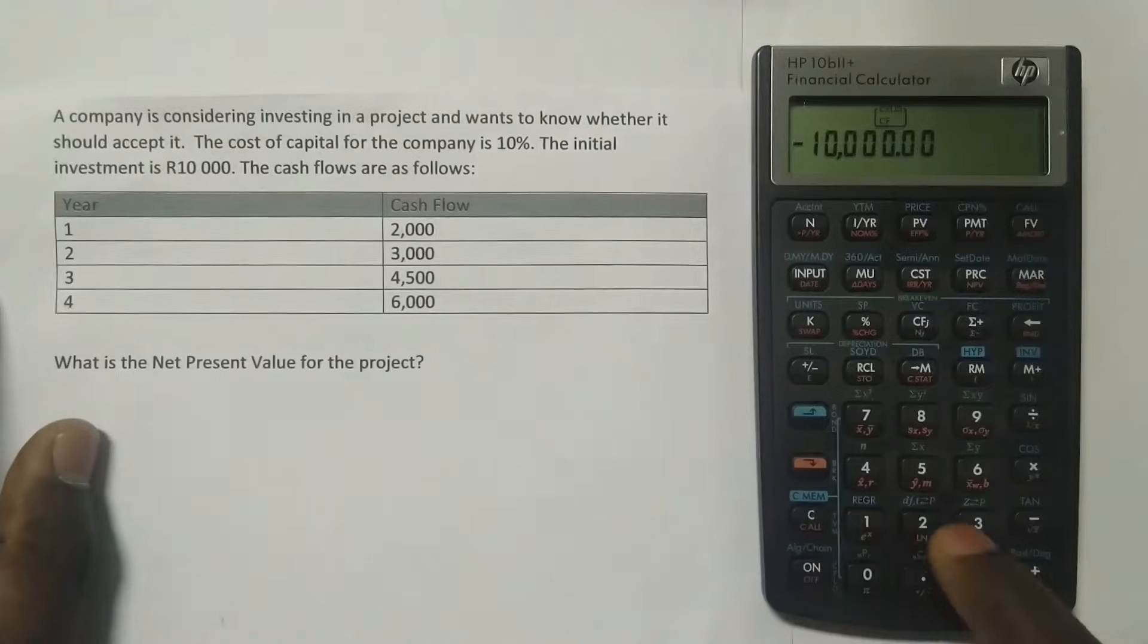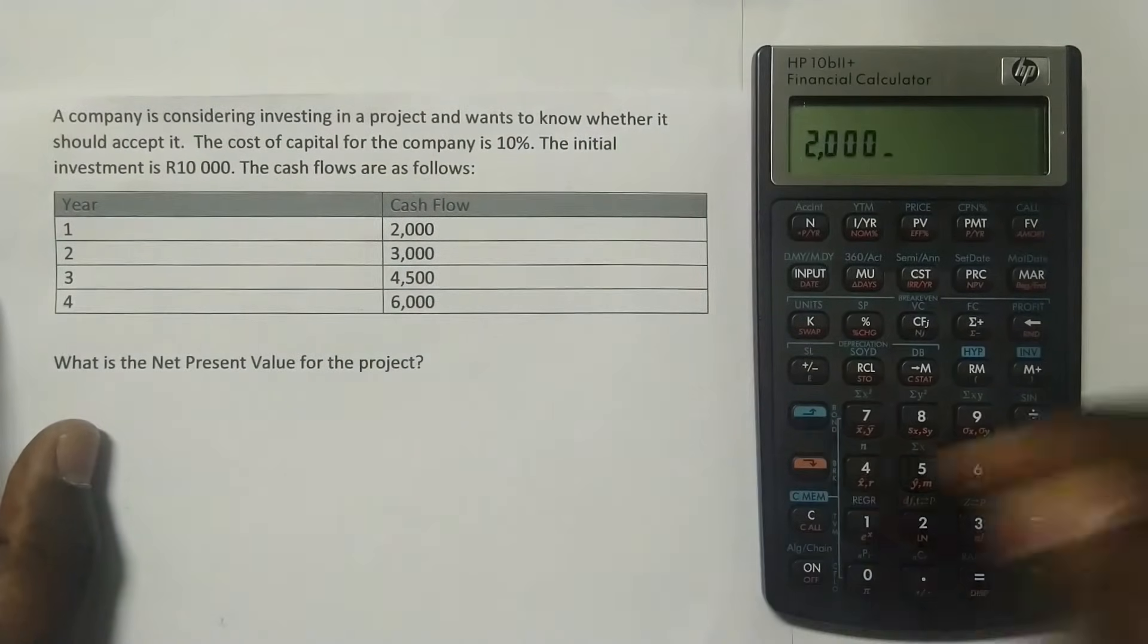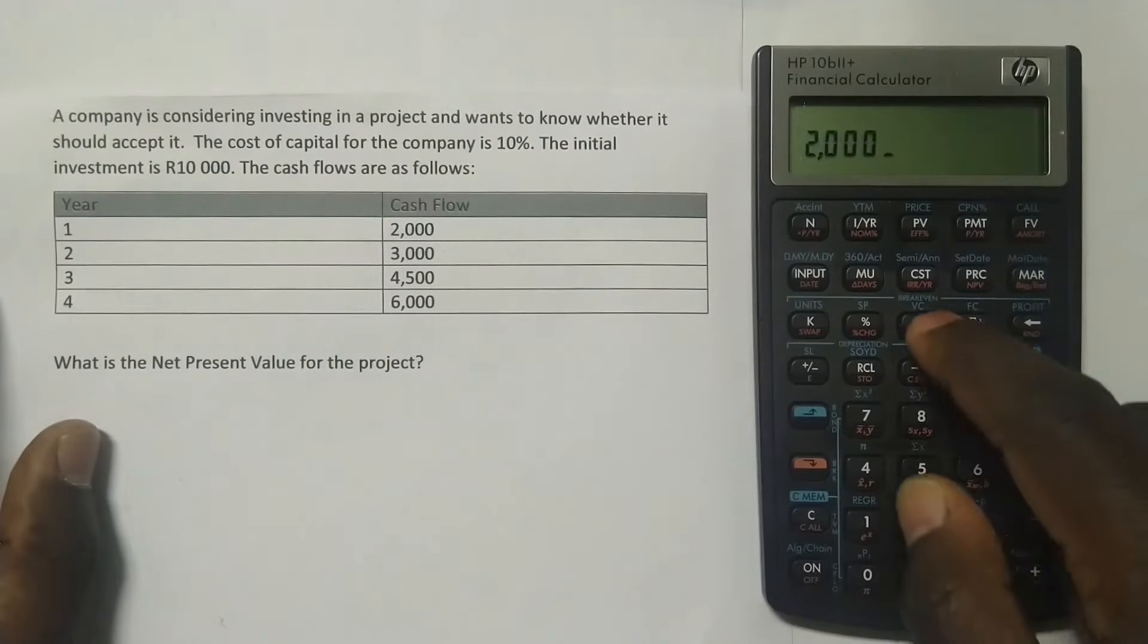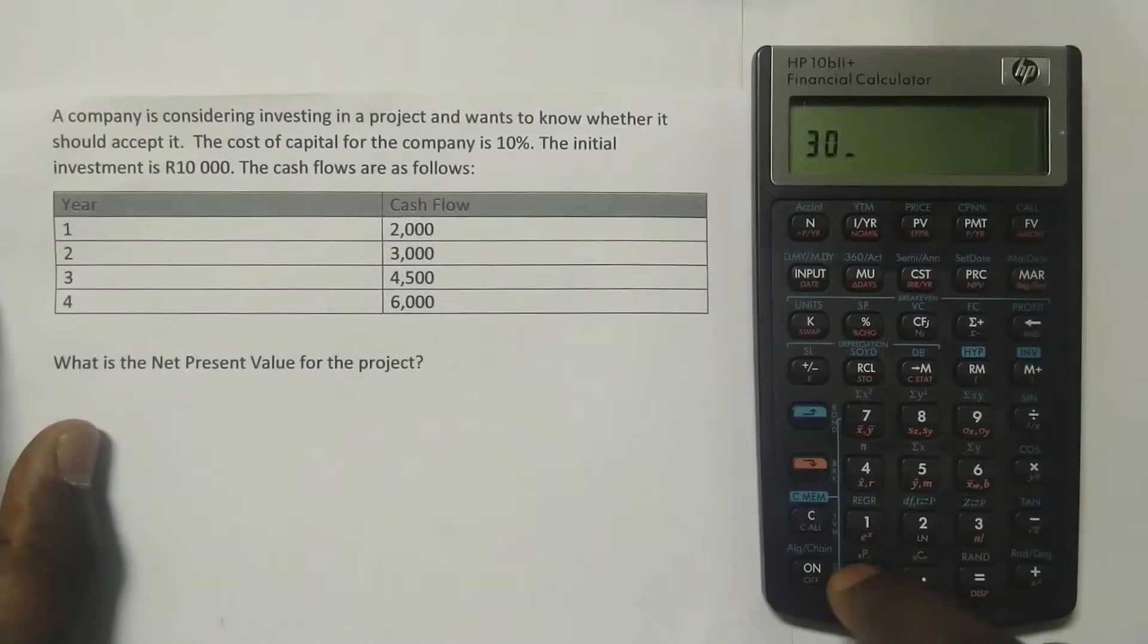And then year one, we have 2,000. So you put 2,000. It's positive. If any of them was negative, you just press the plus slash minus sign, but they're all positive. Then you press cash flow, or CFJ. You can see it's 2,000, and then for the second year, 3,000. Press CFJ.